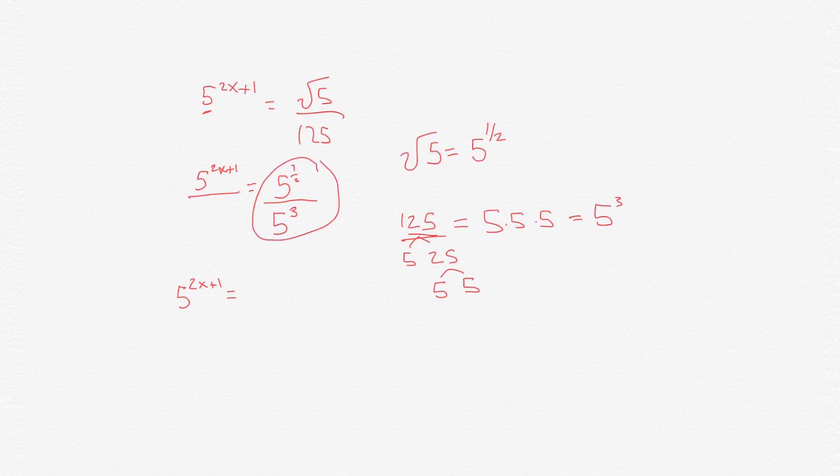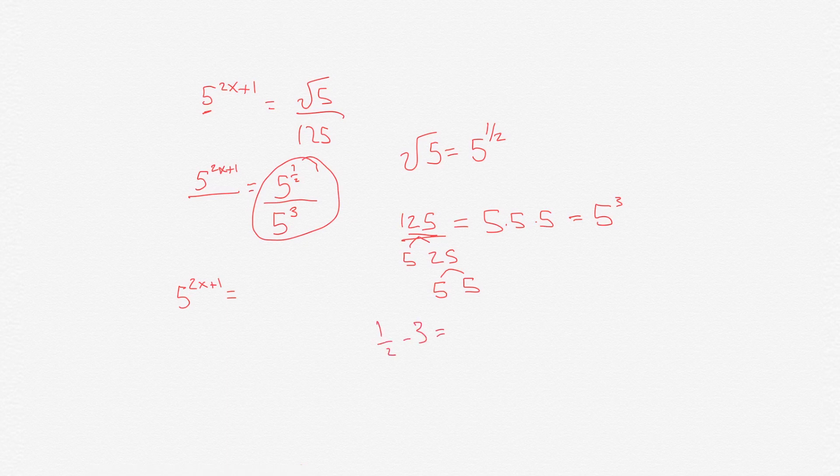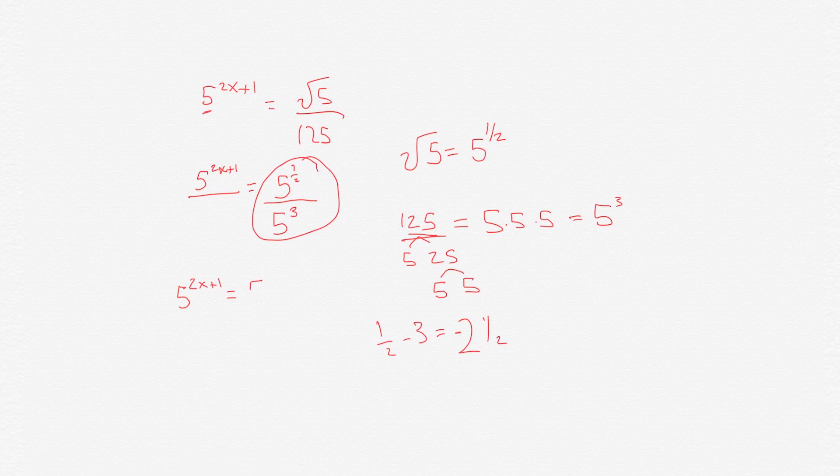Whenever we have a number divided by another number with the same base, then we could just subtract the exponents. So all we have to do is subtract 1 half by 3, and that would equal negative 2 half, 2 and a half. So this one would be 5 to the negative 2 and a half.